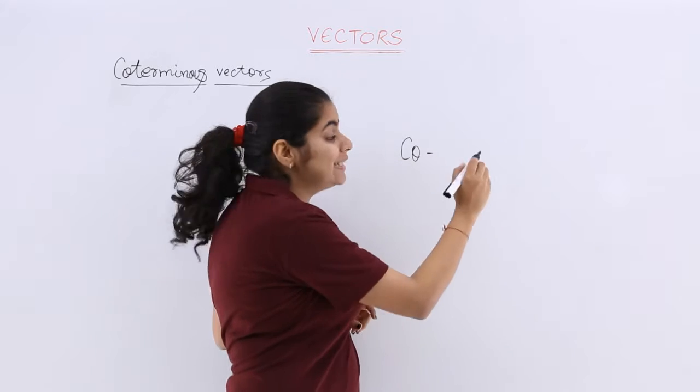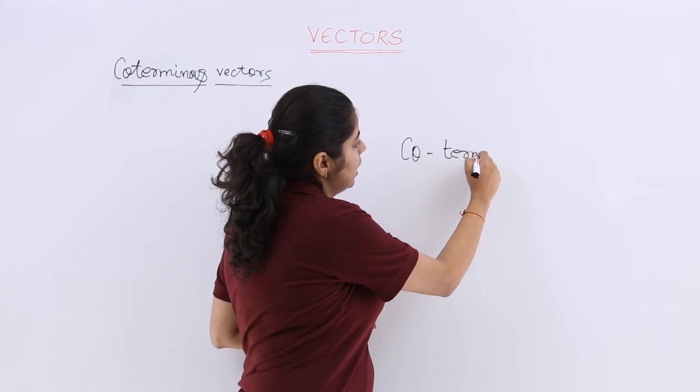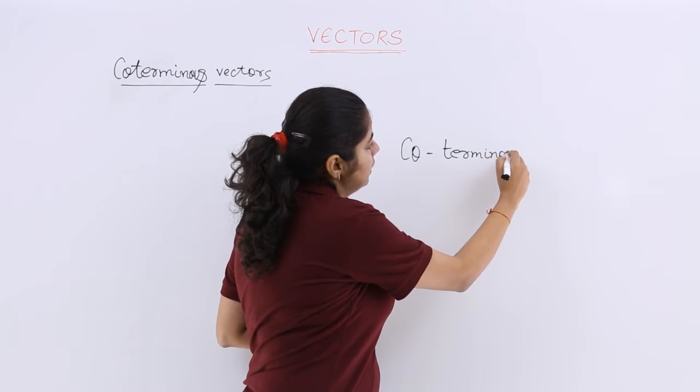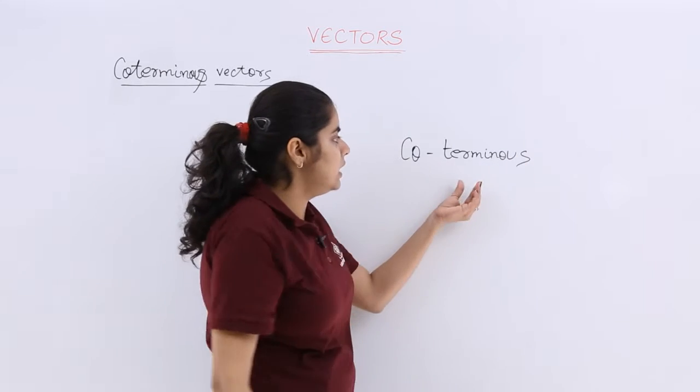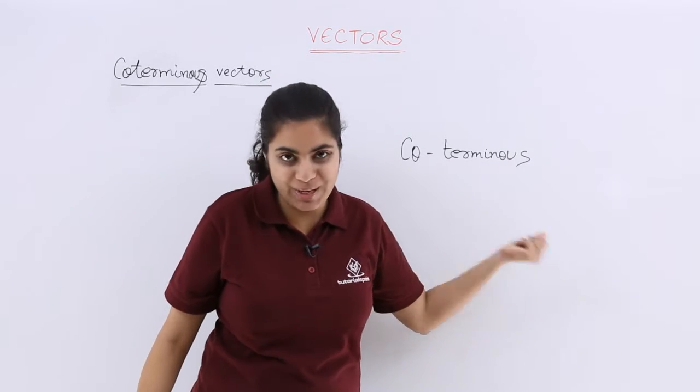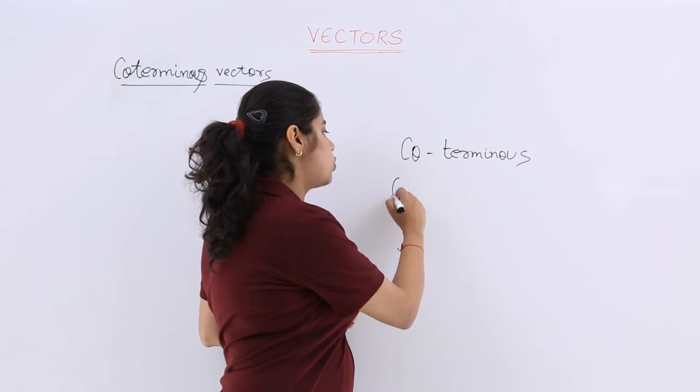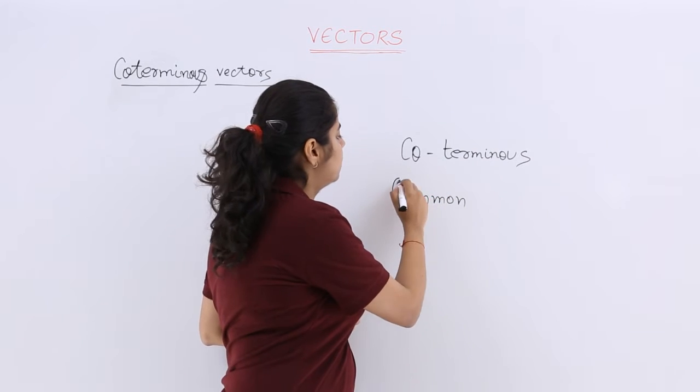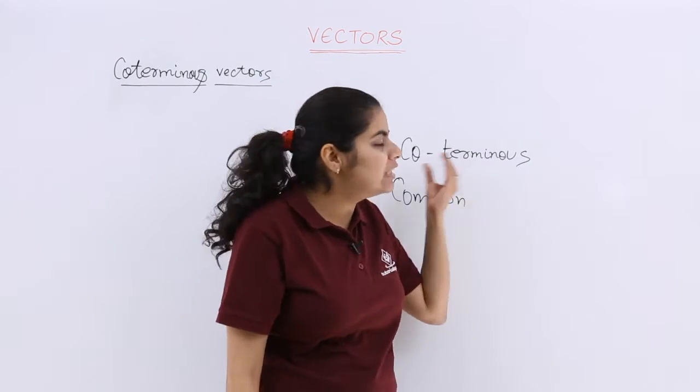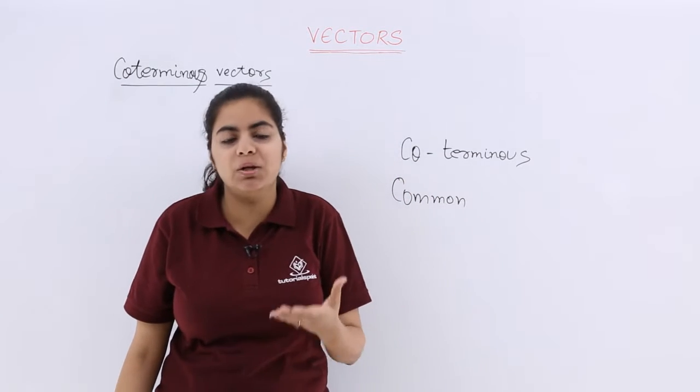So it is coterminous. This is the spelling: t-e-r-m-i-n-o-u-s. Now co means common, as we have studied in the previous video, and terminus refers to the terminal point.